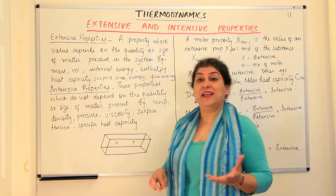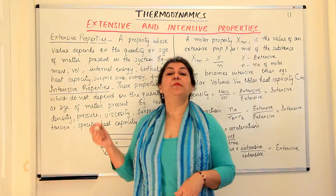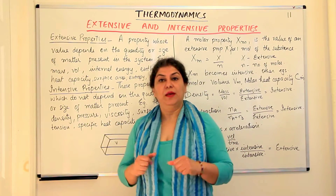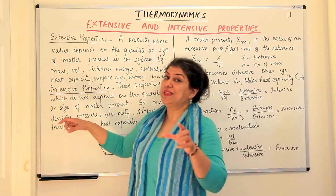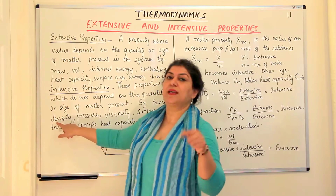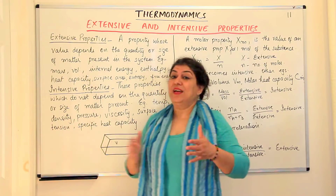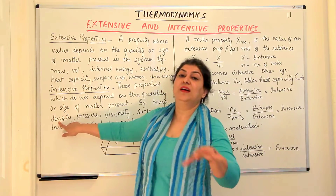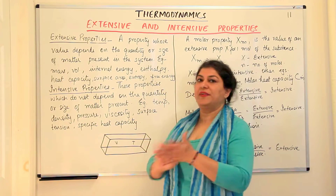Whether it is temperature or density — density is mass per unit volume. If the density of water is 1 gram per centimeter cube and you take 4 cm³ of water, you get 4 grams. But when you calculate the density, it is 4 grams divided by 4 cm³, which gives you the same density of 1 gram per centimeter cube. So density is constant irrespective of the amount — it does not depend on how much substance you have taken.